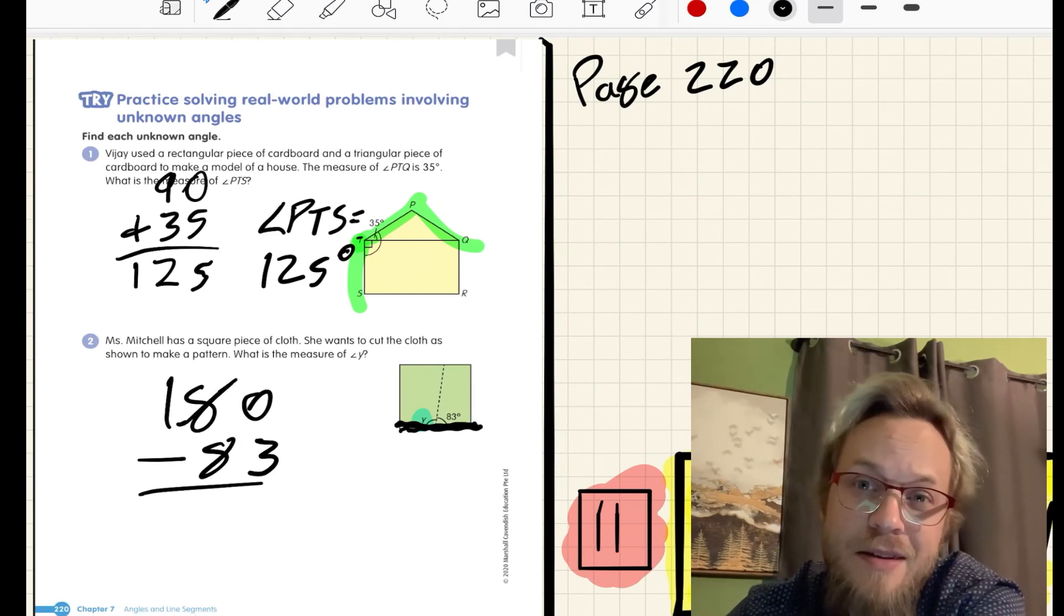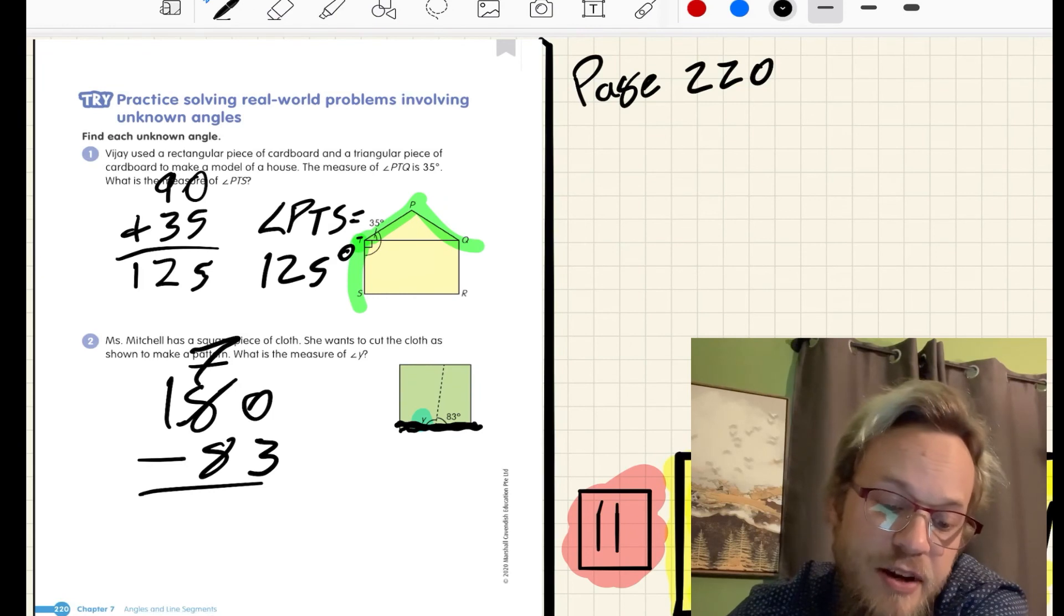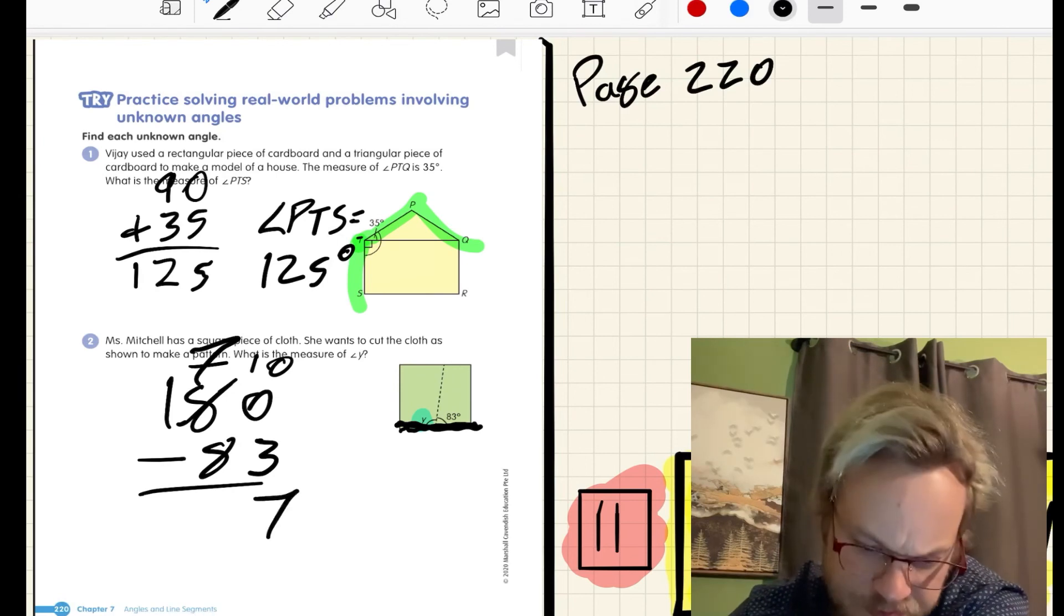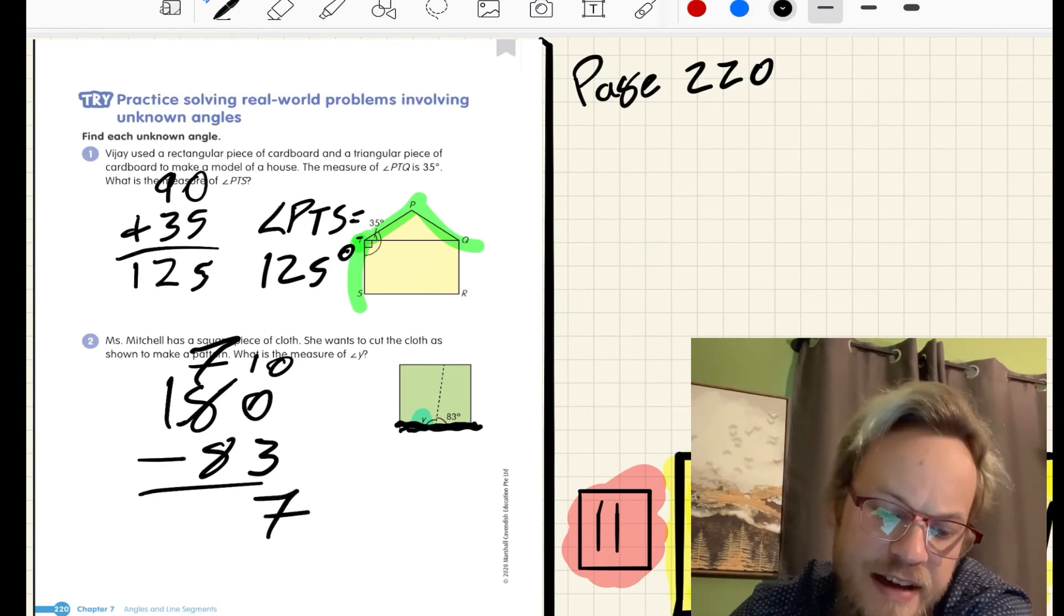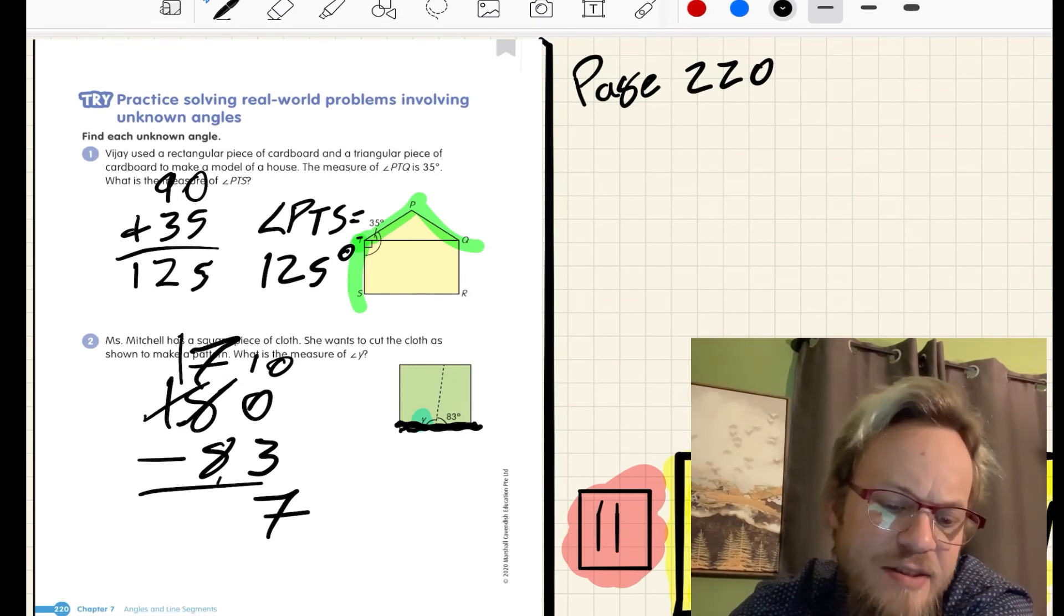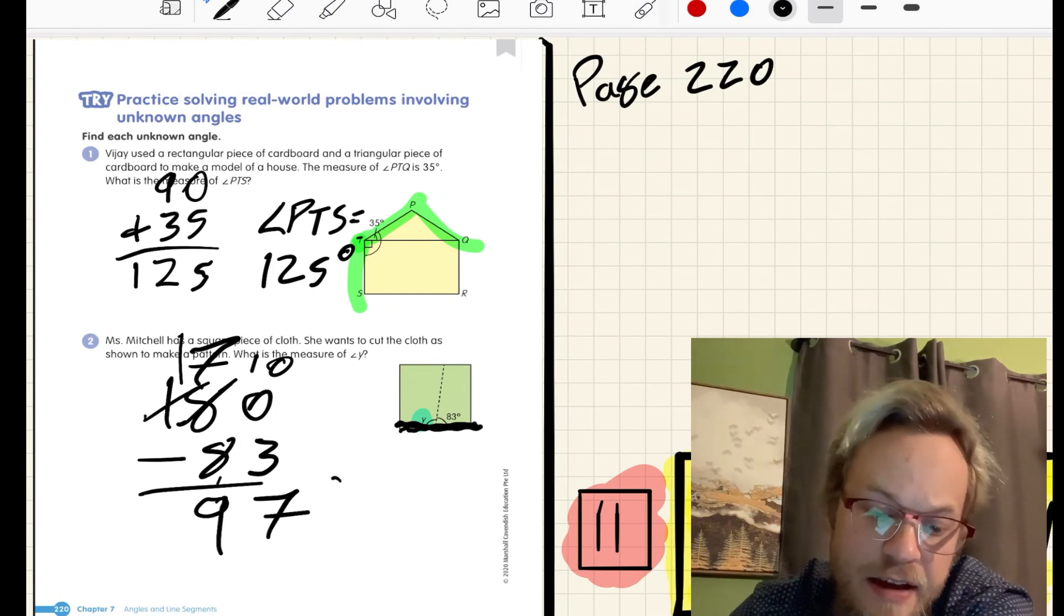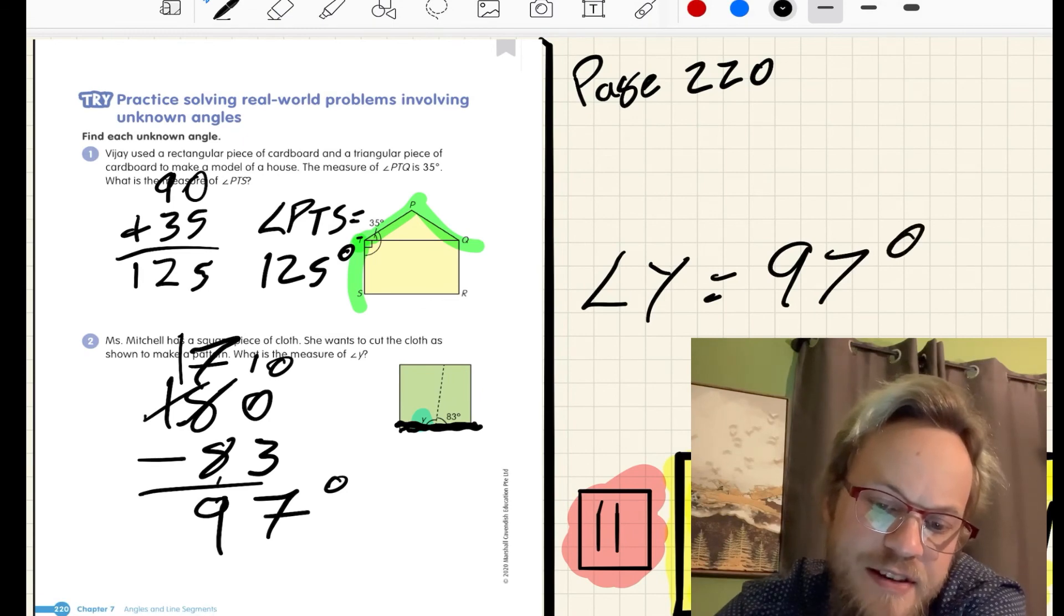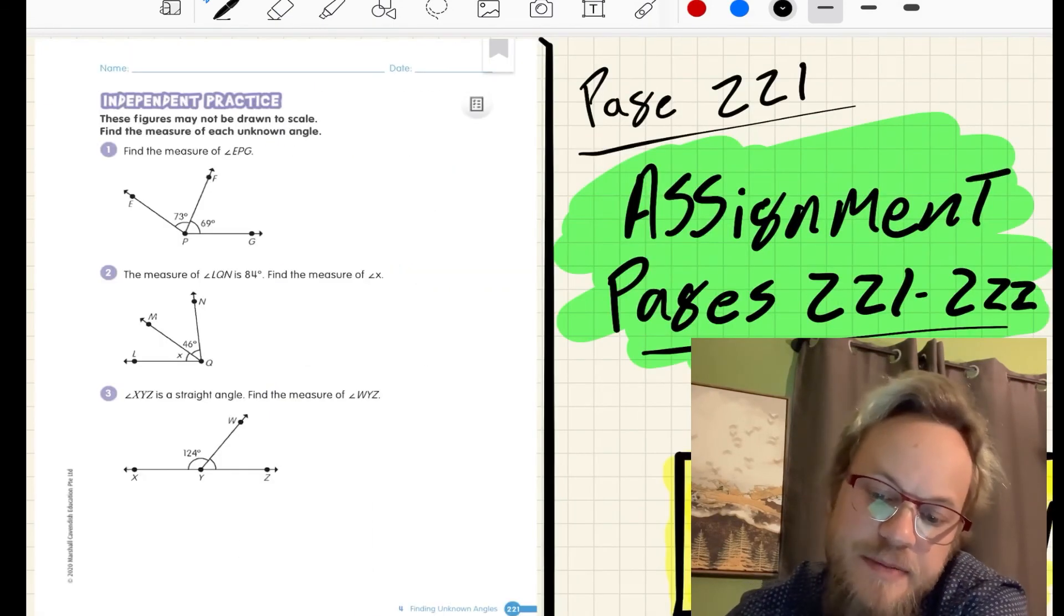I can't subtract anything from zero, so I regroup. 80 becomes 70. My zero ones become 10 ones. 10 minus 3 is 7. Now I have 70 minus 80. I can't do that, so I need to regroup. This becomes 17 minus 8, which gives me 90. Angle Y equals 97 degrees.